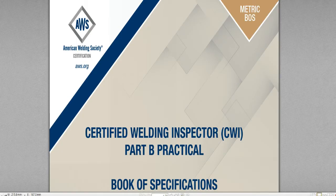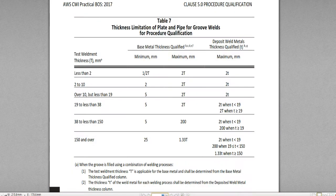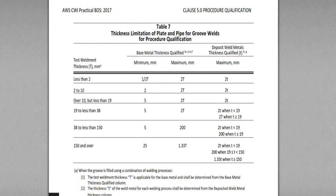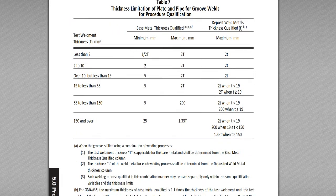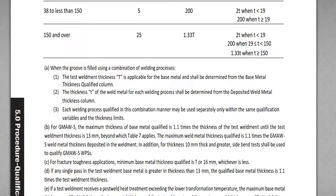Hello, welcome to CWA Part B Practical Book of Specifications, Lecture 15. Today I'm going to give a lecture about Chapter 5. The last lecture we stopped at Table 7. Today we're going to start at the Table 7 note.